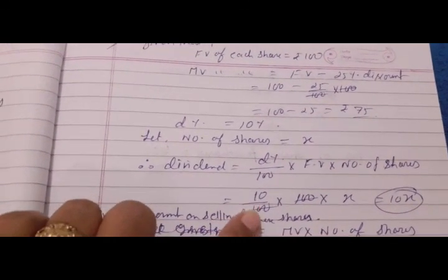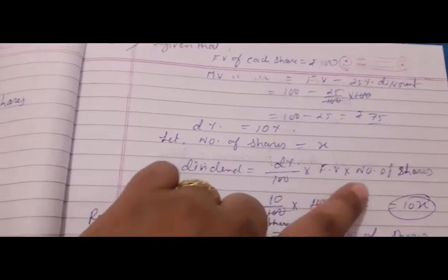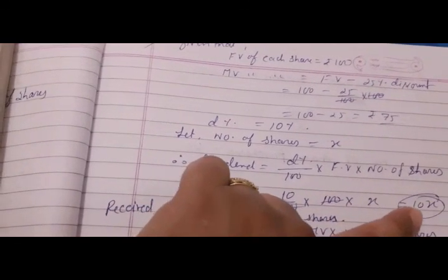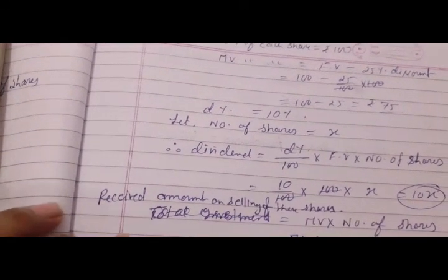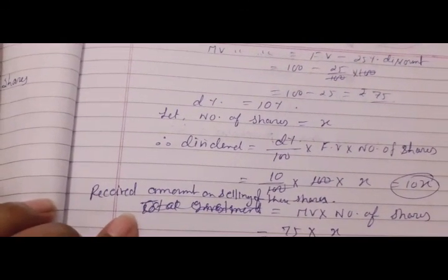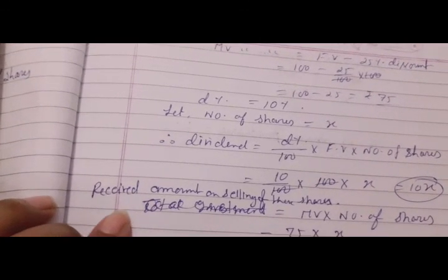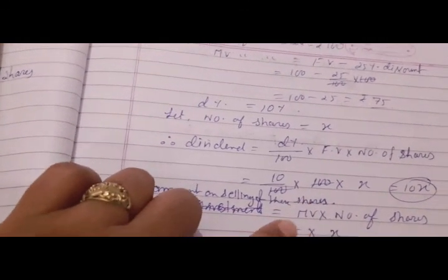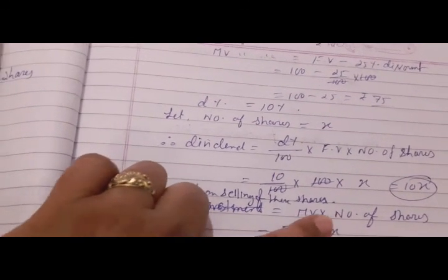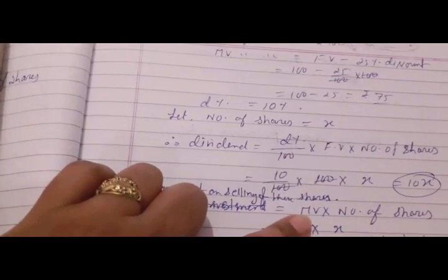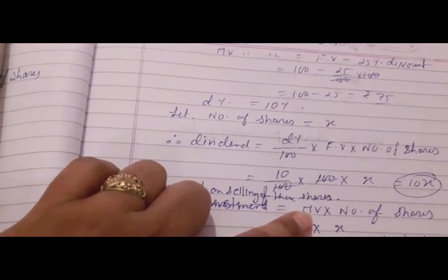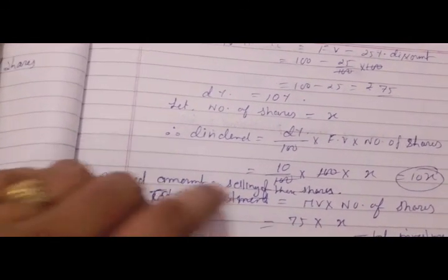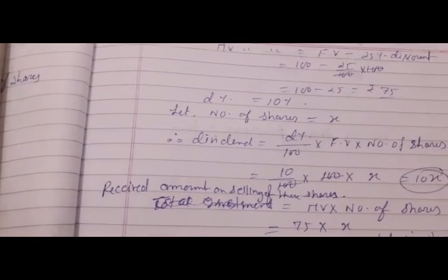Putting the values: 10 upon 100, into face value 100, into number of shares x. The 100s cancel, so dividend from the first type of shares equals 10x. Now, the received amount on selling these first type of shares equals market value into number of shares, which is 75 into x, giving us 75x rupees.